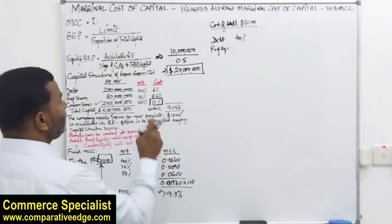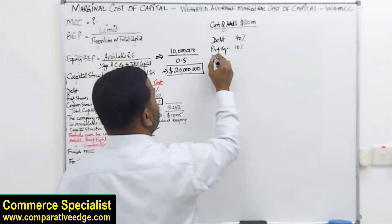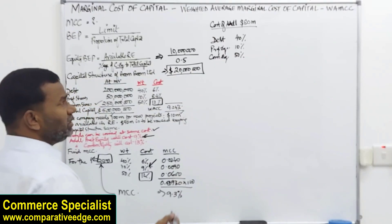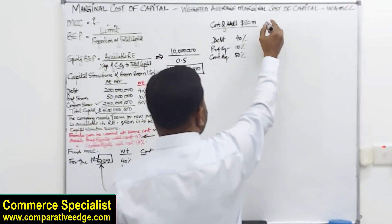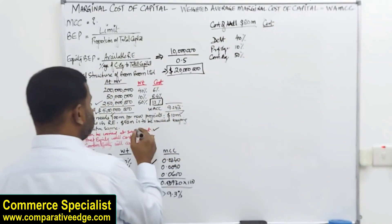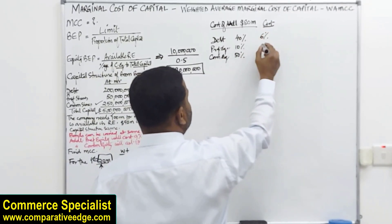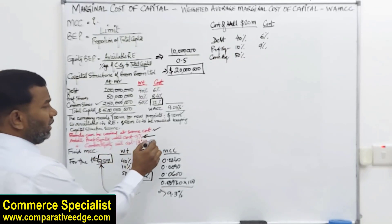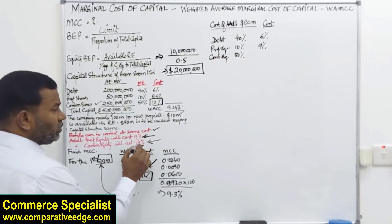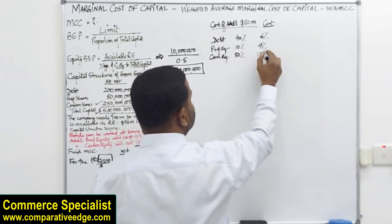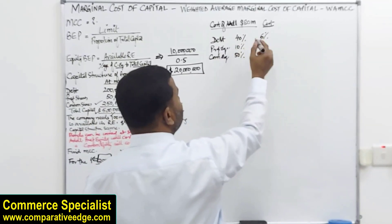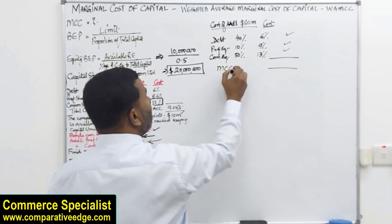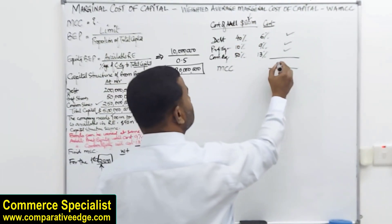For the remaining 80 million, the cost of debt is unchanged at 6%, preferred equity remains at 9%, but now the 80 million comes from ordinary equity — common shares — so the additional cost of issuing new shares is 13%. When we multiply the weights by costs and add them up, the marginal cost of capital for the additional 80 million comes to 9.8%.